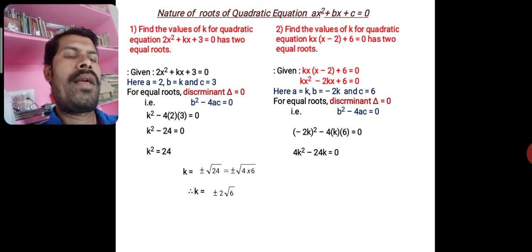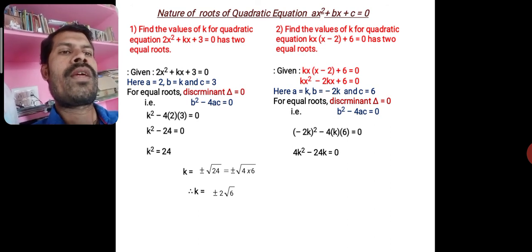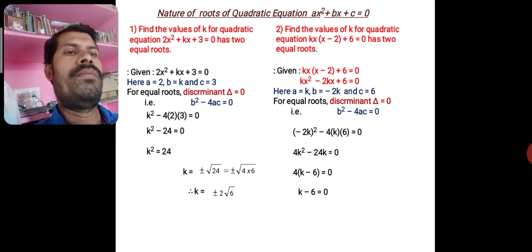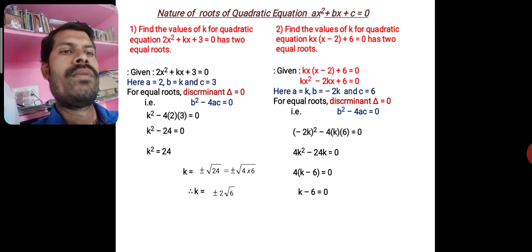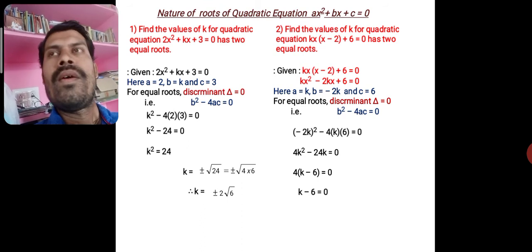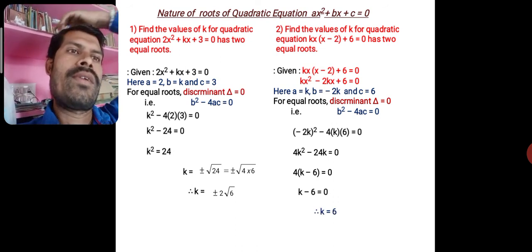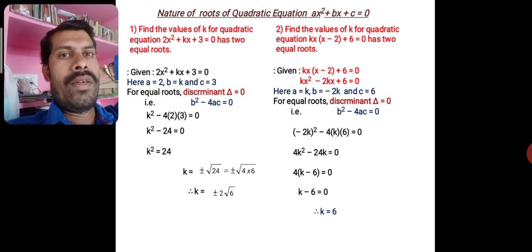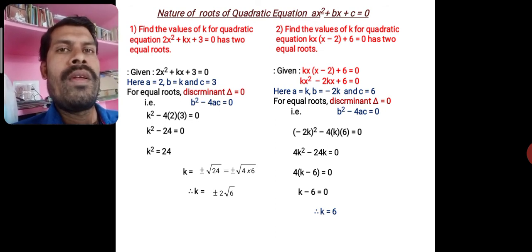Expanding: 4k² − 24k = 0. Factoring: 4k(k − 6) = 0. Since 4 ≠ 0, we get k − 6 = 0, therefore k = 6. For k = 6, the roots of the equation become equal. You can verify by substituting k = 6 and solving.